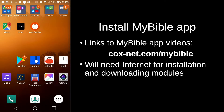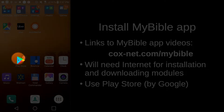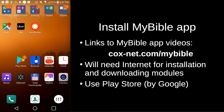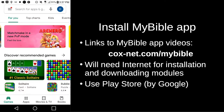To install the app, we're going to need the internet, and also to download the modules. You'll need the internet for a short amount of time to do those things, after which the MyBible app will run without the internet. We're going to use the Google Play Store. On my phone, the Google Play Store is right here. Once you find it on your phone, just tap the Play Store and you should get something that looks like this within the Play Store.